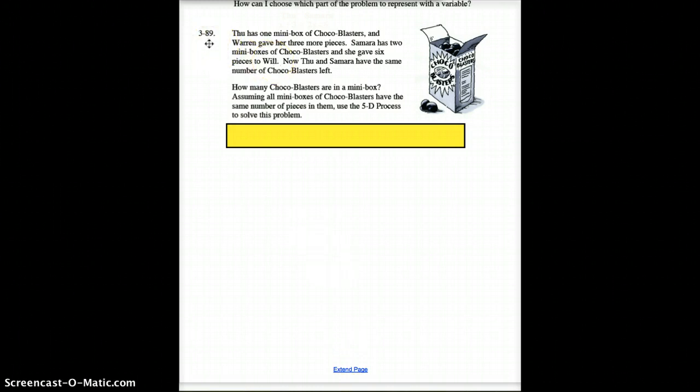So today, let's take a look at the very first problem. I'm going to just extend this page a little bit. In question 89, Thu has one mini box of Cocoa Blasters. But Warren gave him three more pieces, so he's got one box plus three more. Samara has two boxes, but she gave six pieces to Will. So even though she had two boxes of these Cocoa Blasters, she took six of them and gave them away. So that would be two boxes less six.